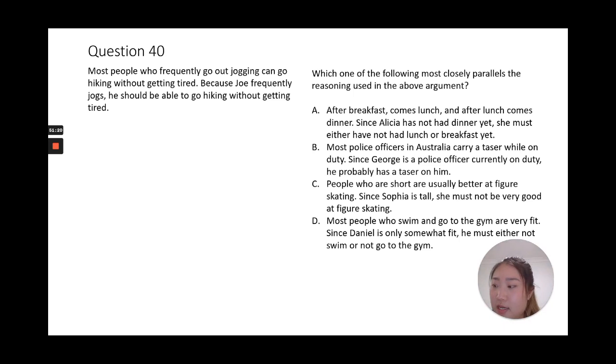So the most similar one is B: most police officers in Australia carry a taser while on duty. So most A have B. Since George is A, he probably will be B. Very similar.